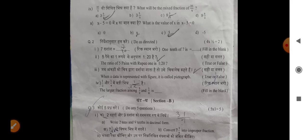X minus 5 is equal to 0x. The value of x. Question 2. 1 tenth of 7 is. The ratio of 5 paisa with rupees 1 is.